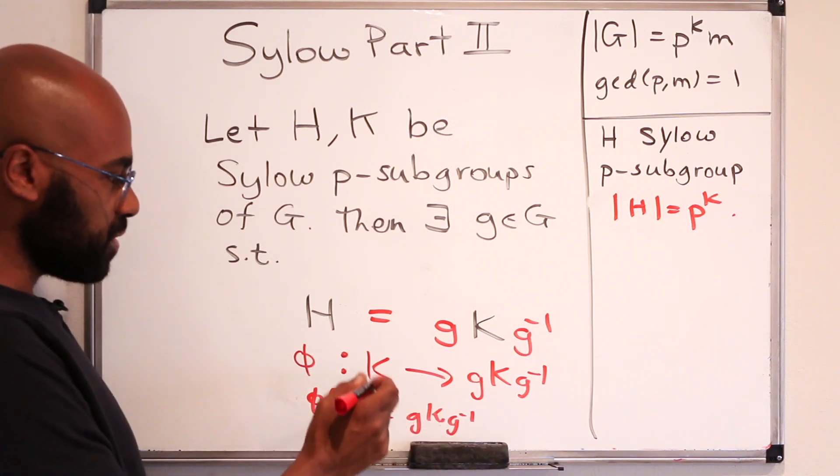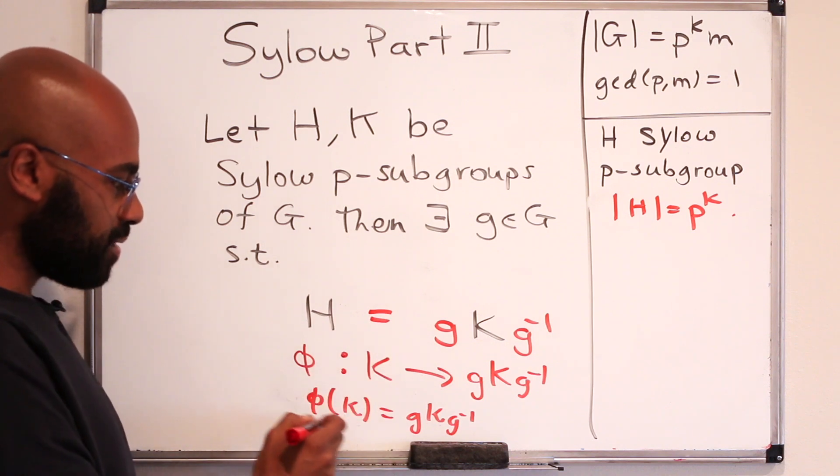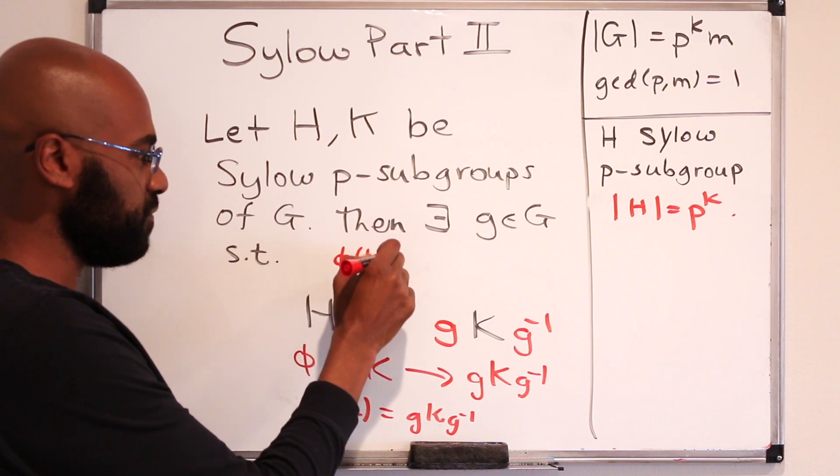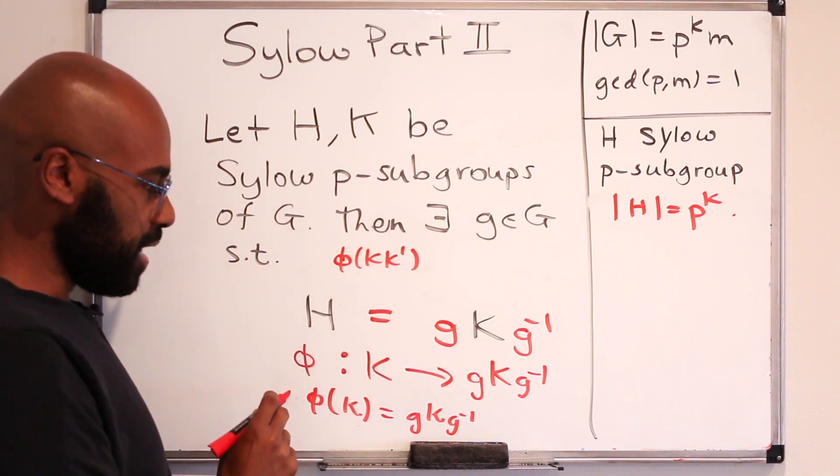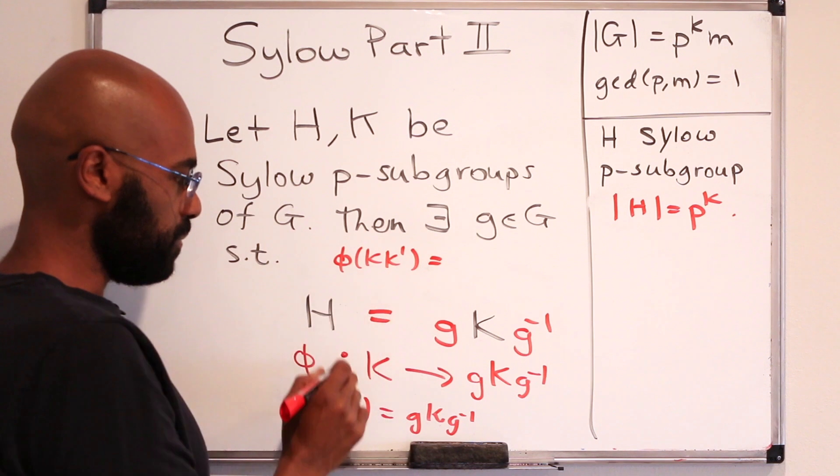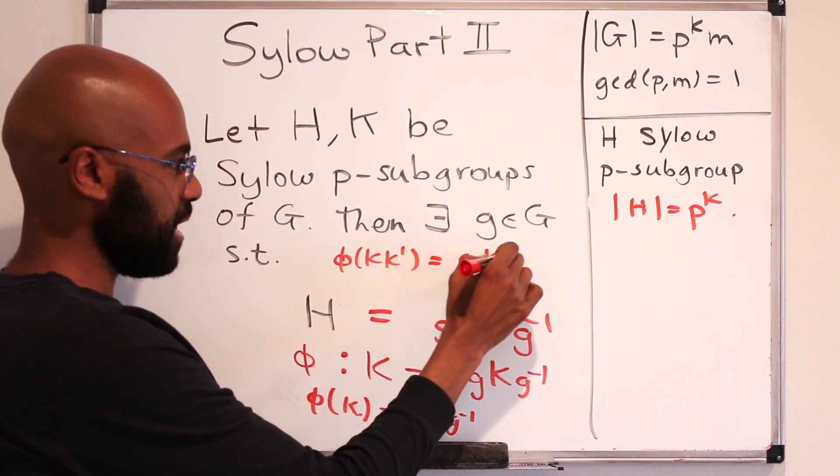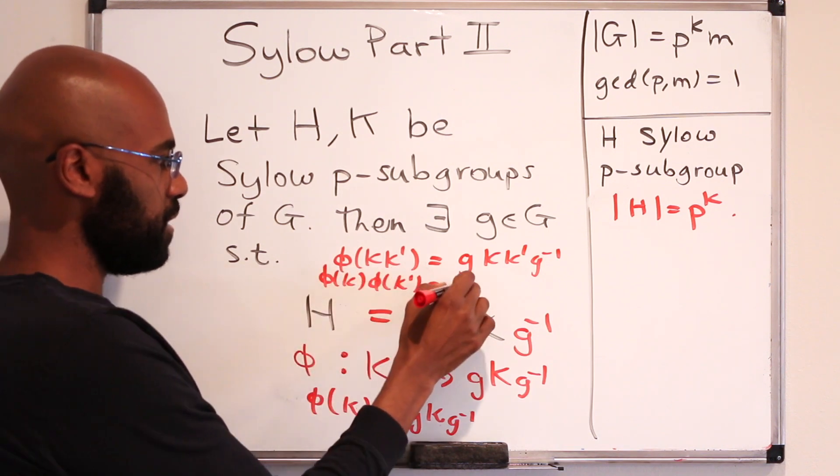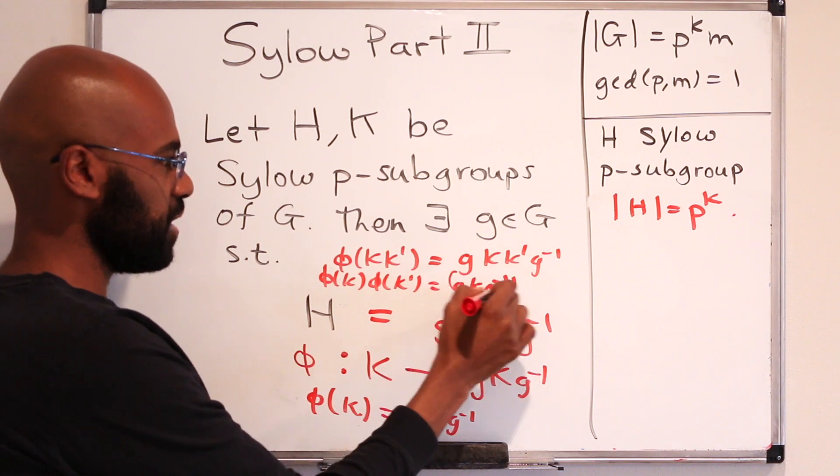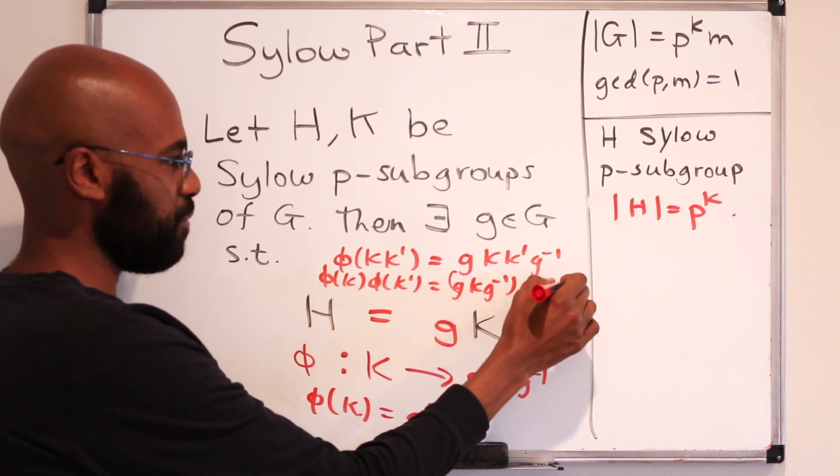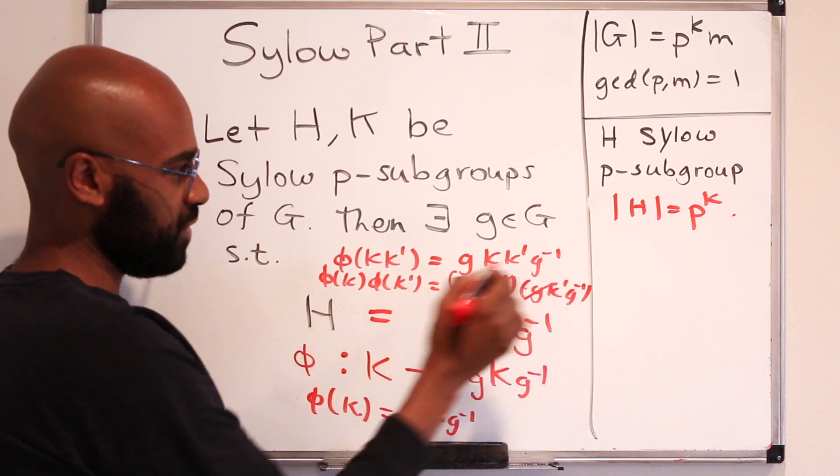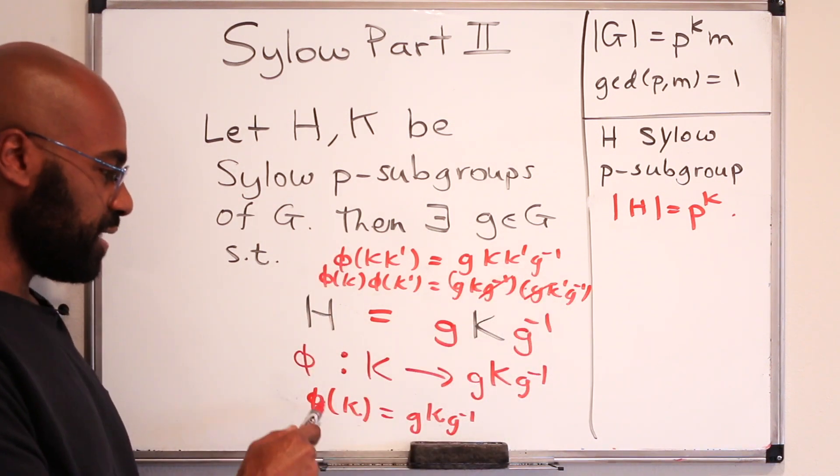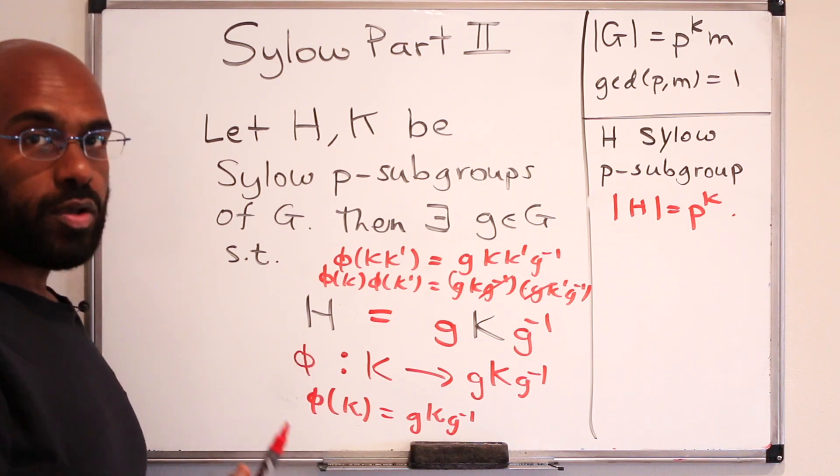Why is this thing actually a homomorphism? We need to check the conditions of being a homomorphism. I'll just actually check one of them. So let's check multiplicativity. If you multiply K and K prime and apply this function, you get G, K, K prime, G inverse. Whereas the product of phi K and phi K prime is G, K, G inverse times G, K prime, G inverse. And these two, G inverse and G, cancel to give you an equality right over here. And you can check this preserves inverses, like phi K inverse is the inverse of phi K.